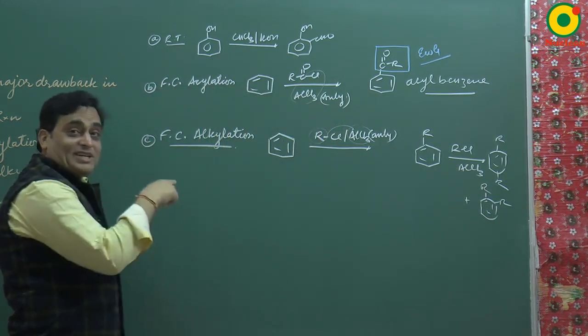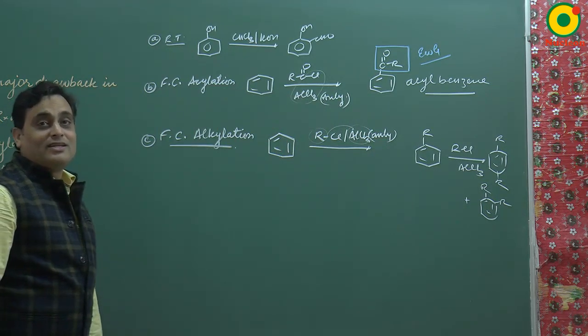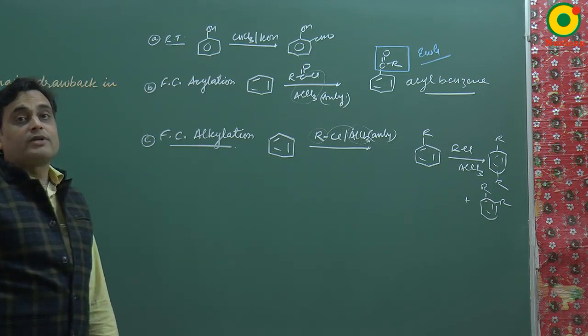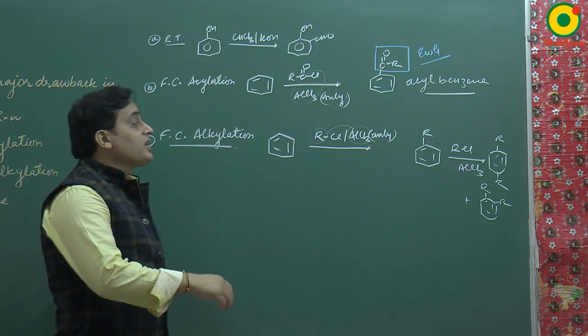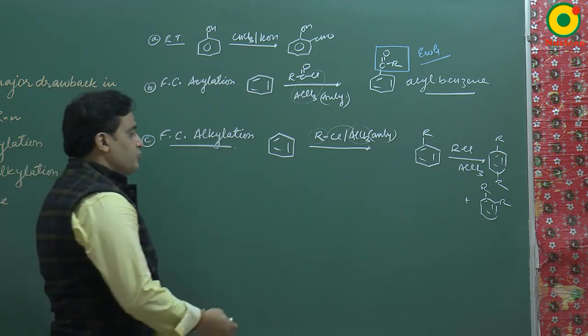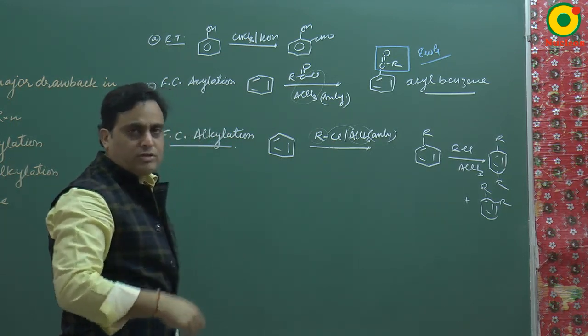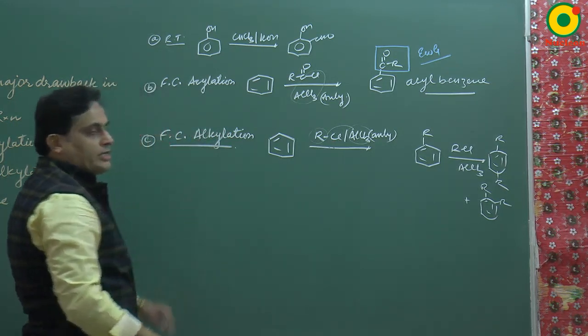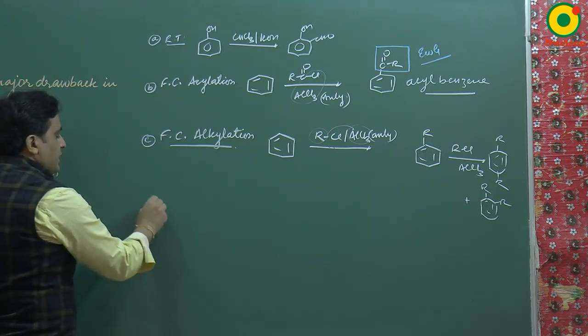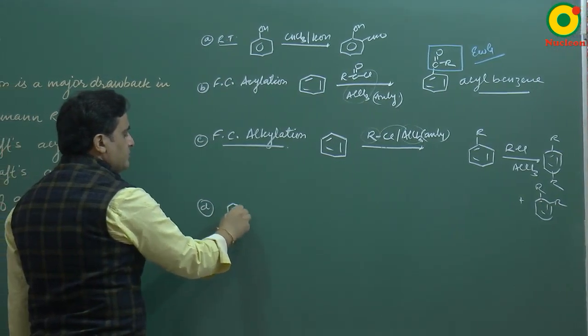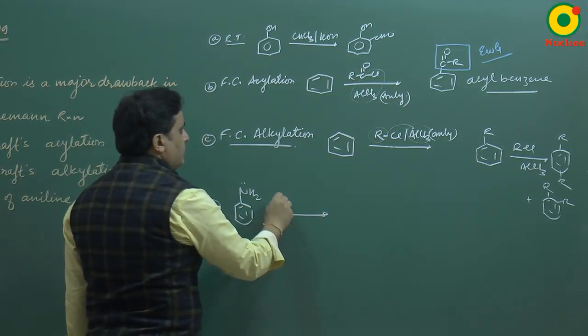This is a drawback of Friedel-Crafts alkylation: polysubstitution can occur. Polyalkyl benzene can be formed. This polyalkylation is minimized by excess benzene, but our answer is C.